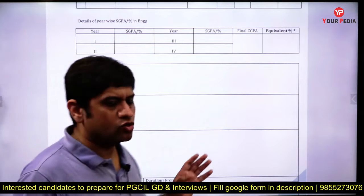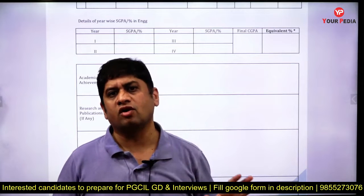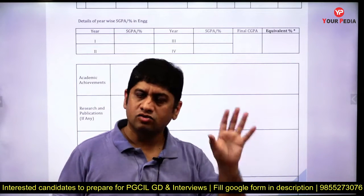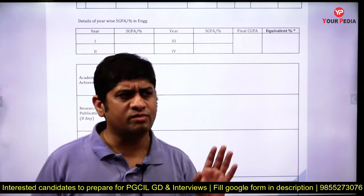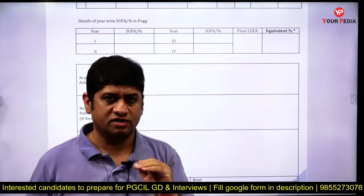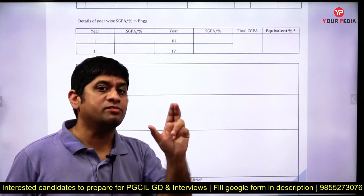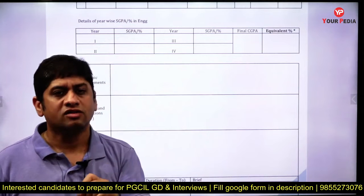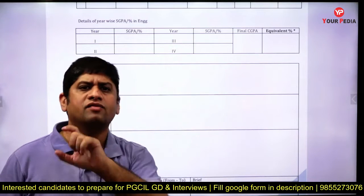Academic achievement can be in your school or your college — like when you scored highest, scored 10 out of 10 in a subject like Control Systems or Strength of Materials, or you got an A grade in a particular semester, or your project received the best project award. You have to mention academic achievements and try to write them point-wise — number one, number two, number three — very clearly, because they will see it and ask you questions from there.